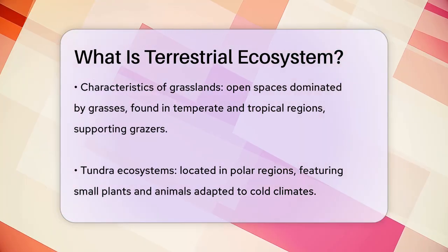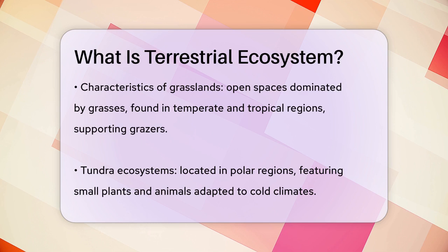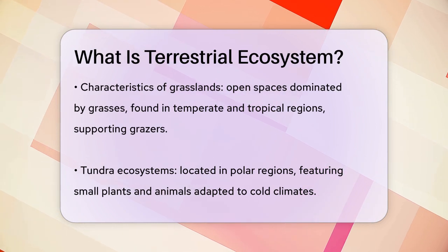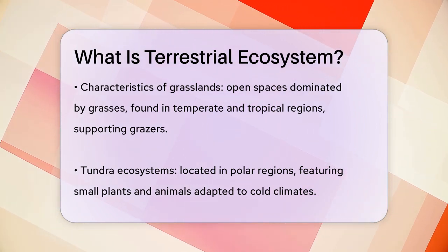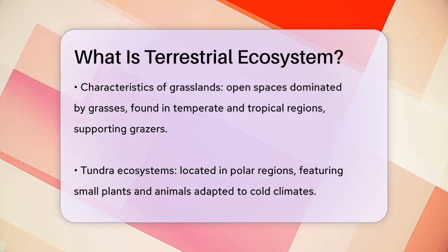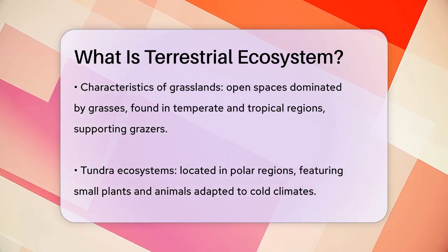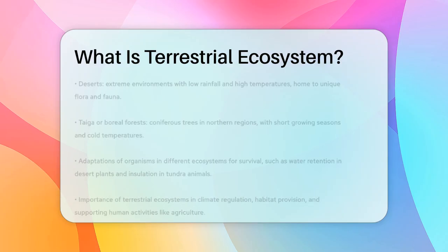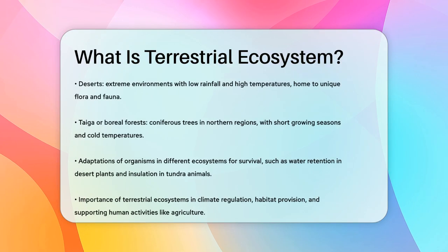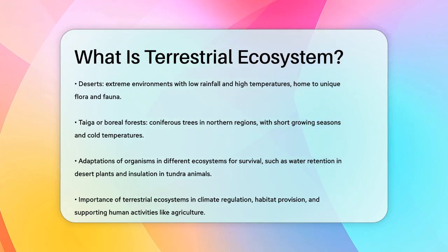Deserts are perhaps the most extreme terrestrial ecosystems, with very little rainfall and high temperatures. Despite these harsh conditions, deserts are home to unique plants like cacti and animals like camels and scorpions. Taiga, or boreal forests, are dominated by coniferous trees and are found in the northern parts of the world, with short growing seasons and cold temperatures supporting animals like wolves, bears, and moose.